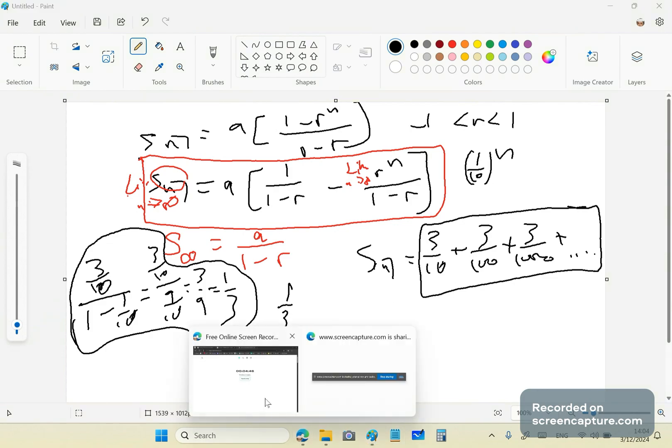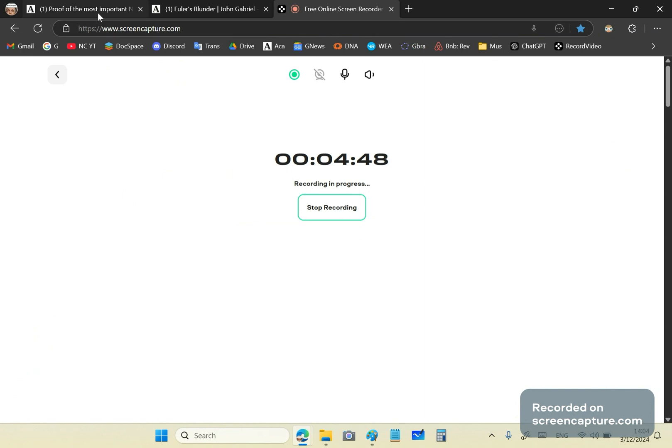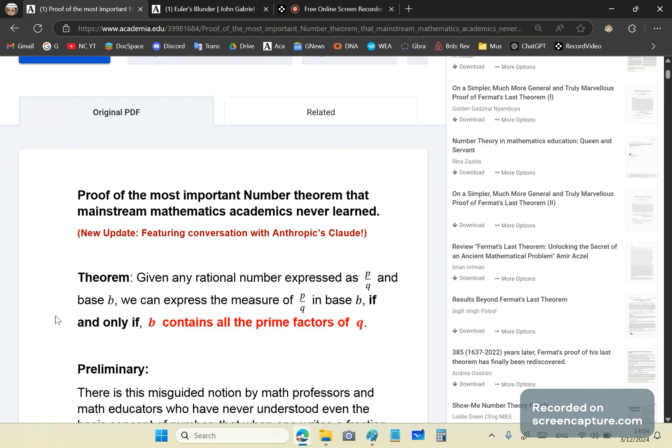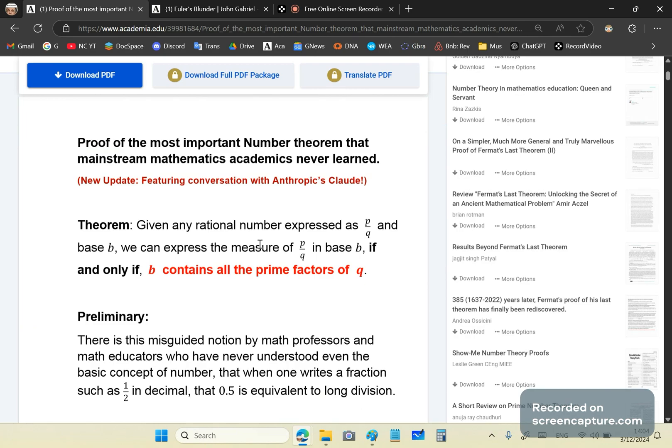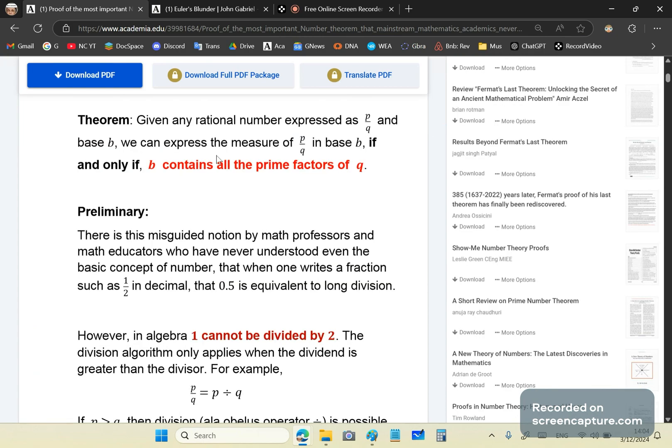Well, I'm going to point you to a proof here that I've created, especially for morons like mathematics professors and teachers. And this is the entire proof. And it's a very important number theorem that mainstream mathematics never learned. What it says is, given any rational number expressed as p over q and base b, we can express the measure of p over q in base b if and only if b contains all the prime factors of q.